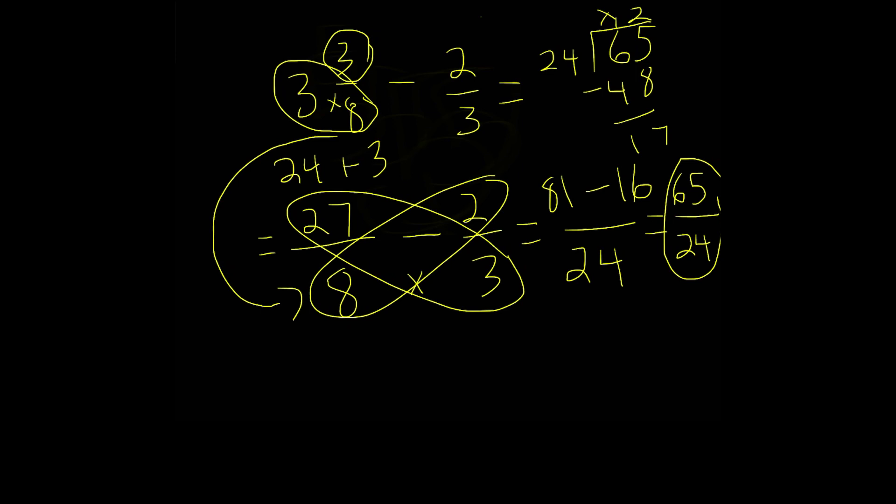So we have 2 remainder 17. So our mixed number is, I'm going to write it down here, our whole number is going to be 2. And our remainder, which is 17, that's going to be our numerator.